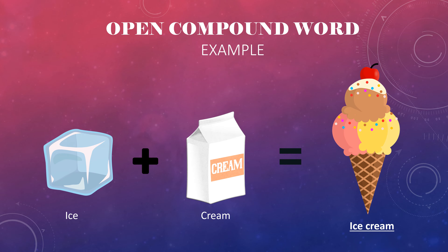Let's look at an example for an open compound word. The word ice plus the word cream makes the word ice cream. That was pretty easy, wasn't it? Comment below to tell me which flavor of ice cream is your favorite. Do you notice how there is a space between the word ice and cream? This is how you write an open compound word.